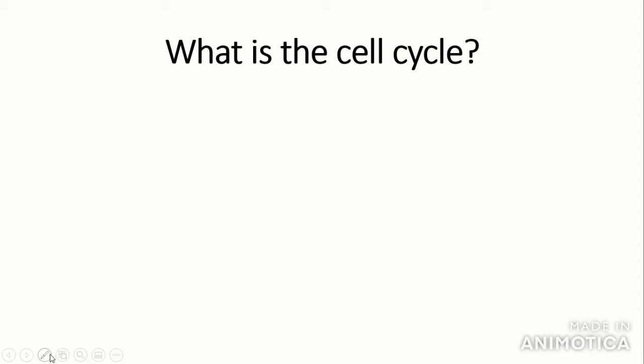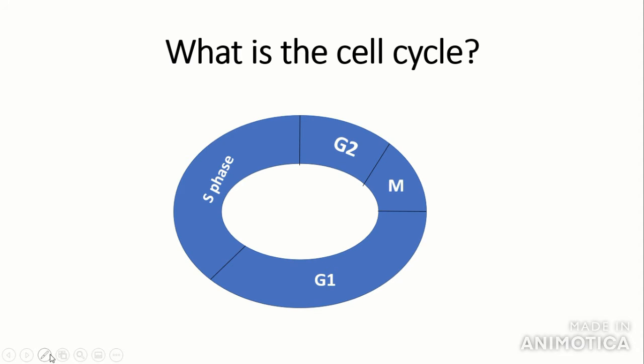So what is the cell cycle? The cell cycle is a series of steps or stages which goes around in a cycle that a cell normally goes through. The cell cycle is divided into four stages: mitosis, G1, S phase, and G2. I think here I'm going to put arrows just to signify that it is a cycle.